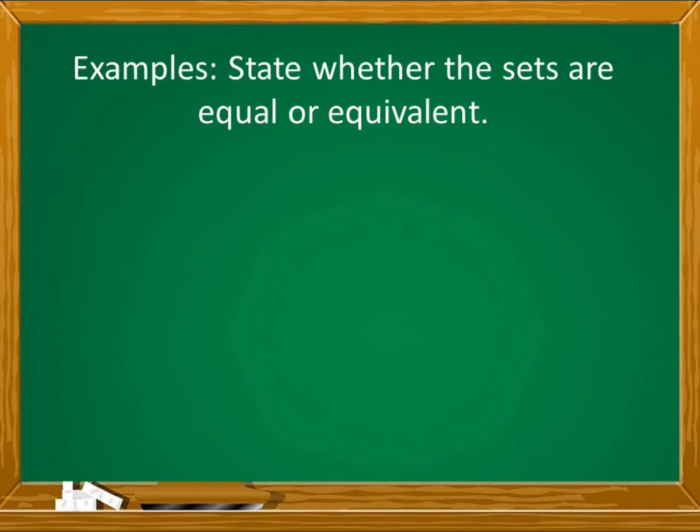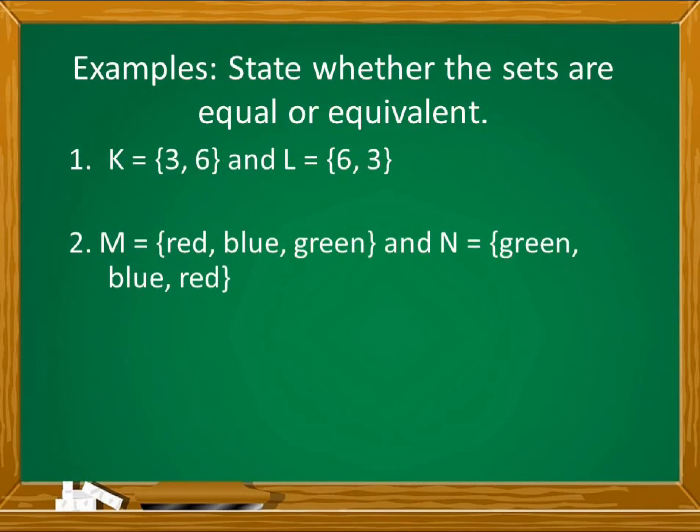Examples: state whether the sets are equal or equivalent. Number 1, set K equals {3, 6} and set L equals {6, 3}. Number 2, set M equals {red, blue, green} and set N equals {green, blue, red}. And number 3, sets O equals {5, 9} and P equals {1, 2}. For number 1, as you can see, set K has elements 3 and 6, and set L has 6 and 3. The elements of these two sets are precisely the same. Naiba lang ng order. So, K and L are equal sets.